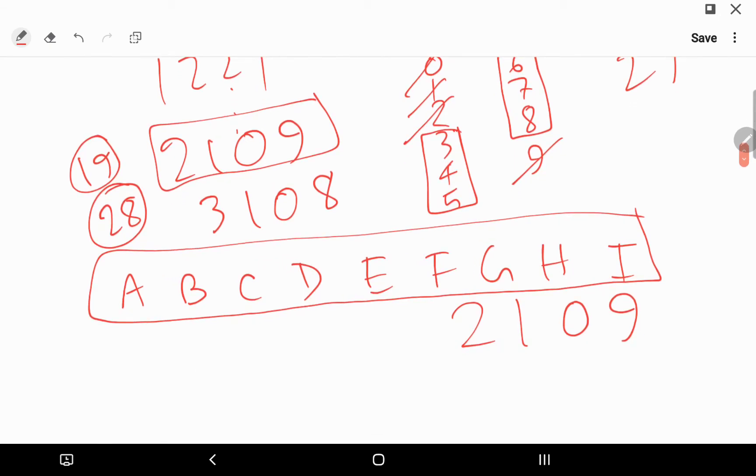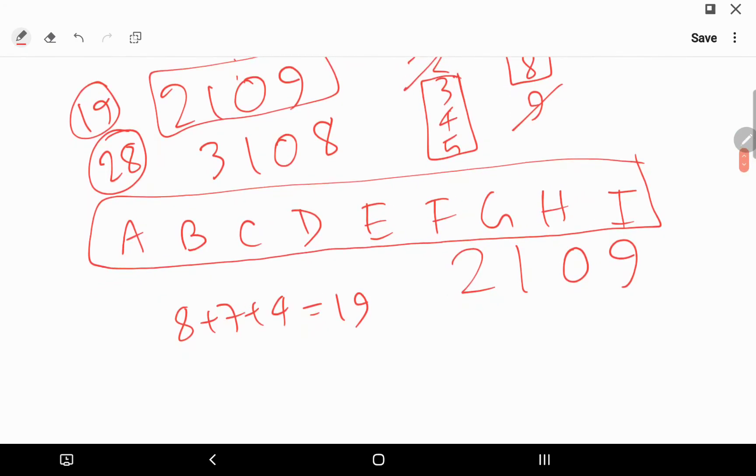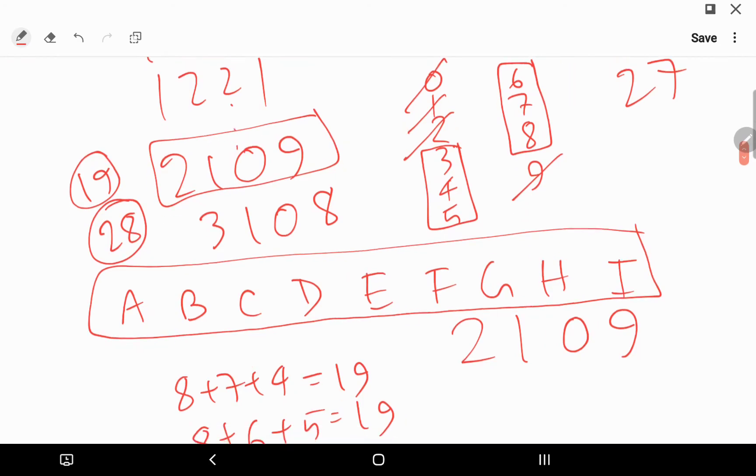We will use the skill with playing the game Kakuro, and I can get 19 as 8 plus 7 plus 4 is 19, and 8 plus 6 plus 5 is also 19. If I exclude 8, I will not get 19.